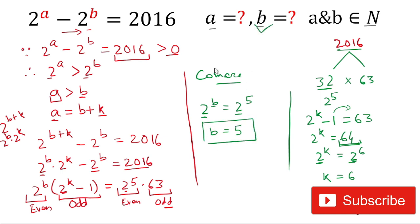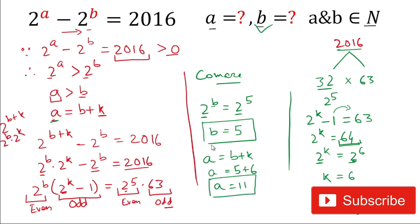So we have b equals 5 and k equals 6. Since a equals b plus k, the value of a is 5 plus 6 equals 11. Therefore a equals 11 and b equals 5. Don't forget to subscribe to the channel and give a thumbs up. Thank you for watching.